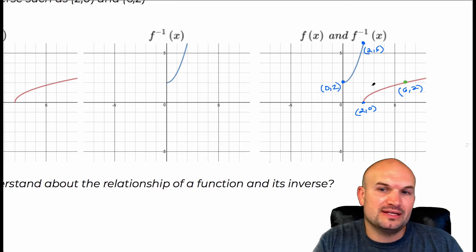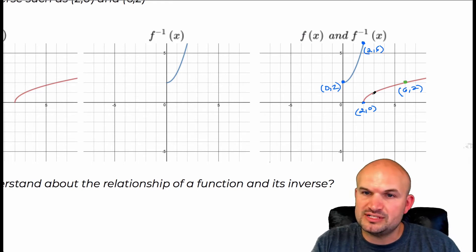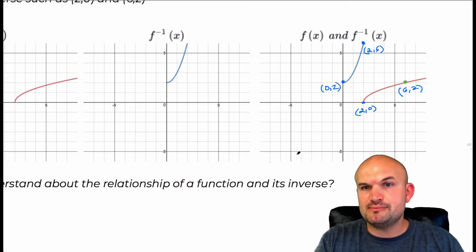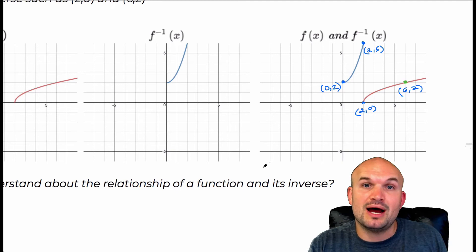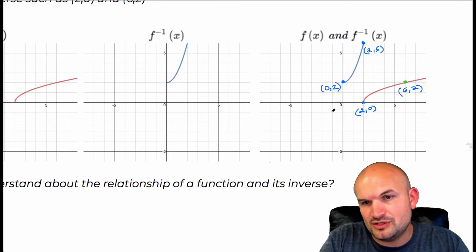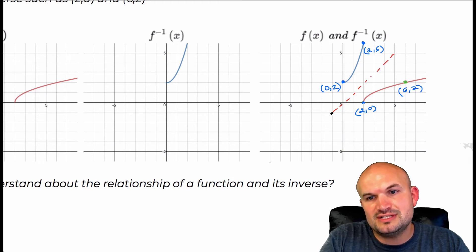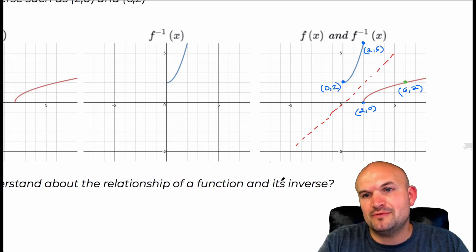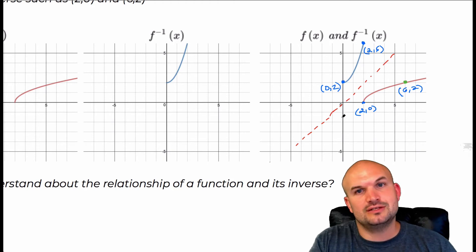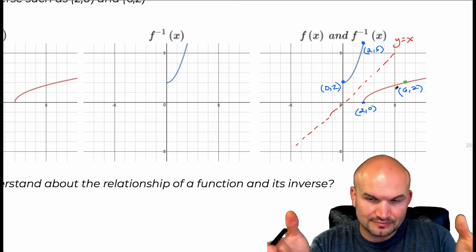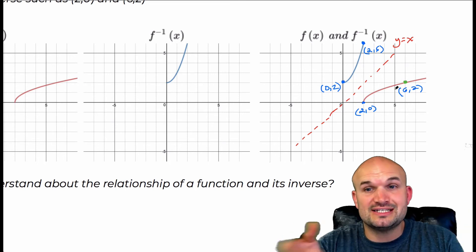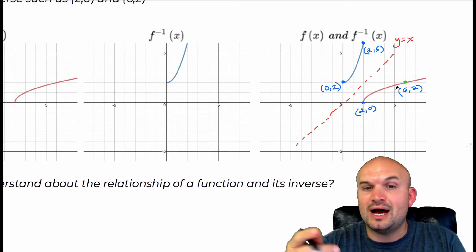The other really important thing to understand is that besides the coordinate points being swapped, there is symmetry. Previously we've only talked about symmetry along the Y axis and the origin, but these graphs are symmetrical about a diagonal line — the identity line Y equals X. So a function and its inverse are symmetrical about the Y equals X line.